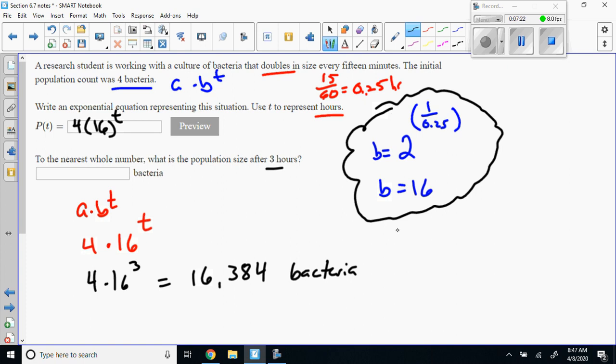Some people will do it like 4 times 2 raised to t over 0.25. That will still give you the same answer. You put the t time over the 0.25 because it's hours every 15 minutes, how many hours or in that hour that it doubles.